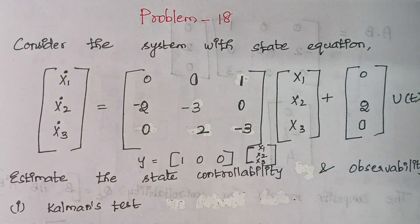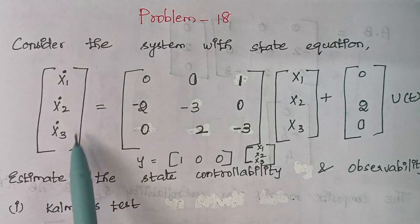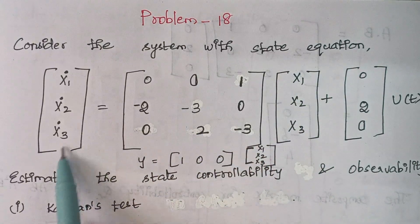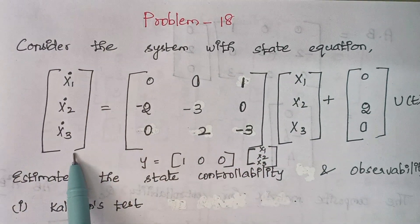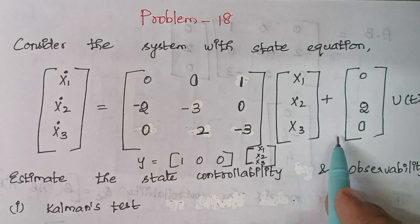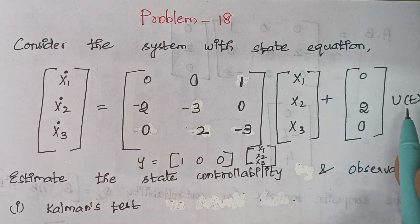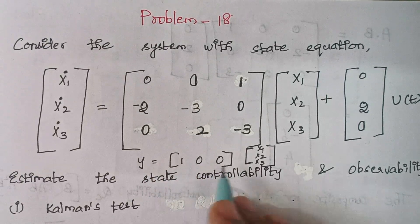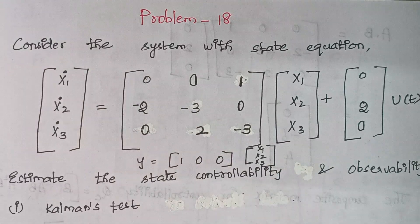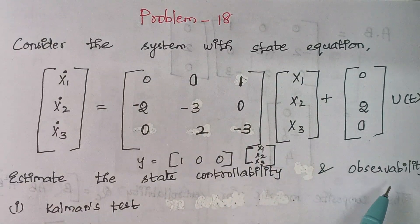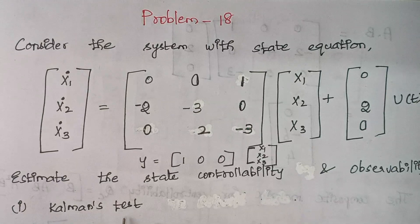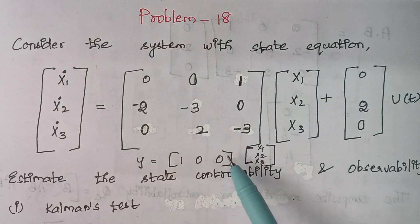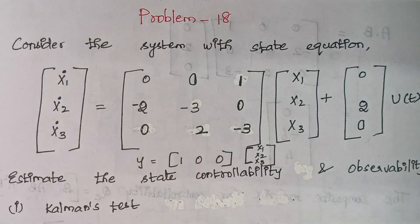Hello viewers, I am Kausalya. Today we are going to solve problem number 18. The problem is: consider the system with state equation x1-dot, x2-dot, x3-dot given by an A matrix plus a B matrix multiplied by u(t), and the output y is given by [1 0 0] multiplied with [x1 x2 x3]. We will estimate the state controllability and observability using Kalman's test.